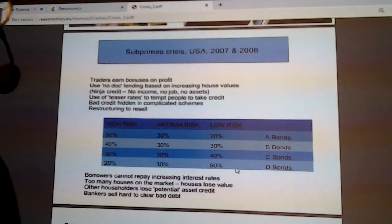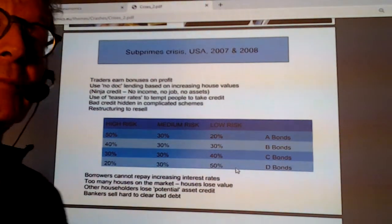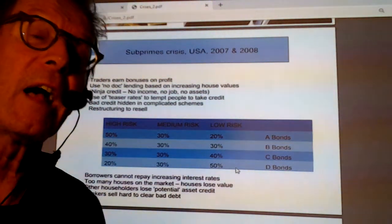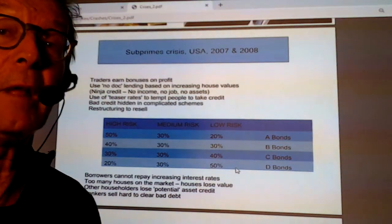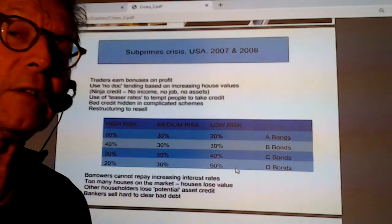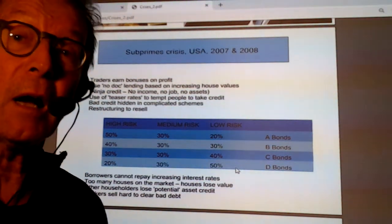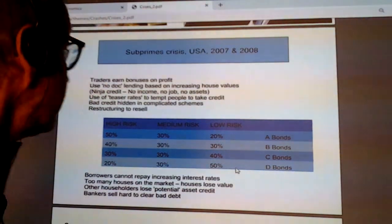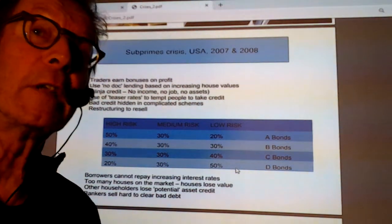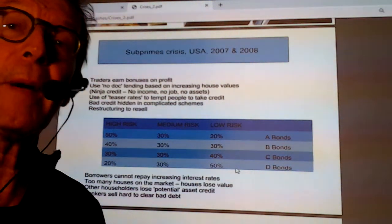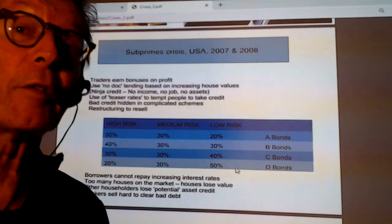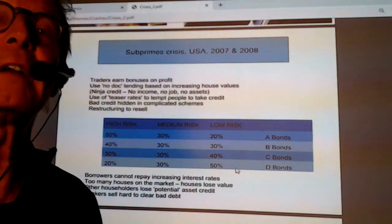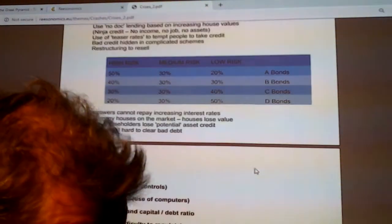Once the interest rates kicked in, borrowers couldn't repay their debts. The bank or new debt owner took over the house. But suddenly there were too many houses on the market at the same time, so house prices collapsed. The whole credit system was based on a rising housing market. Other homeowners who were potentially good to repay found they were paying a debt for a house now worth much less than they borrowed. They also walked away from their mortgages, and bankers desperately tried to sell off this polluted debt.